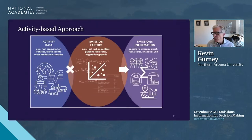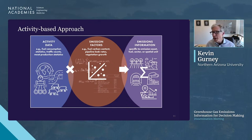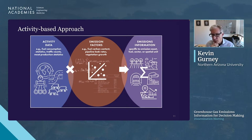Activity-based approaches in their most rudimentary form involve taking activity data — such as vehicle miles traveled — and multiplying by an emissions factor to derive an emissions amount. These now span a wide variety of increasingly sophisticated approaches, though they can all be covered by this idea of using activity data.